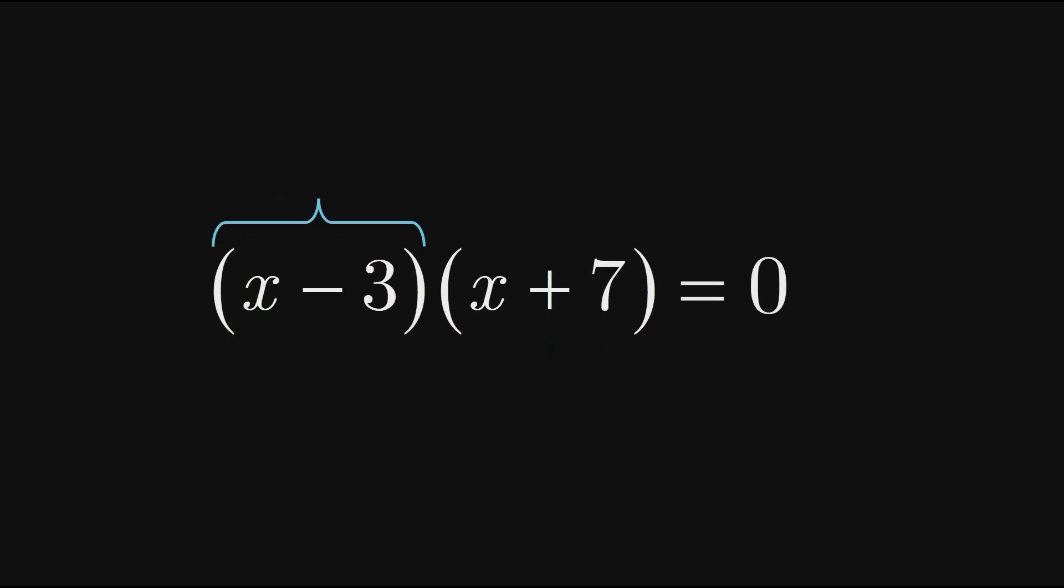Notice that here we have something times something equal to zero, and as we know, one of the somethings must therefore itself be zero. That is, either x minus 3 is zero, or x plus 7 is zero.